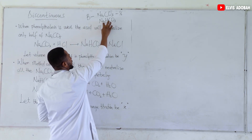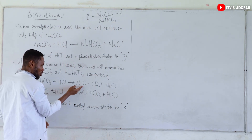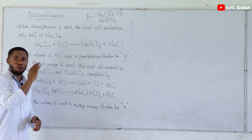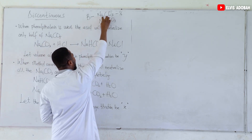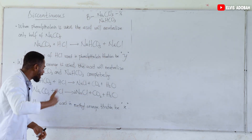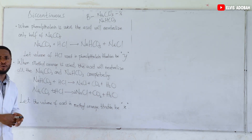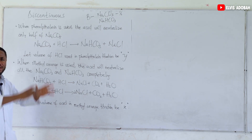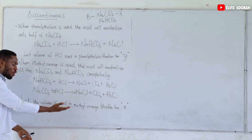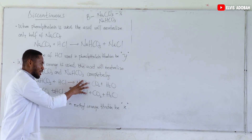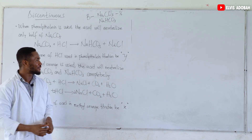When methyl orange is used for this titration, the acid will first pick up all the sodium bicarbonate present and convert all of it to sodium chloride, carbon dioxide and water — complete neutralization. After that, the HCl will convert all the remaining sodium bicarbonate to sodium chloride, CO₂ and water. It takes a longer period before we reach our endpoint. Let's assume the volume of acid used in this methyl orange titration to be X.